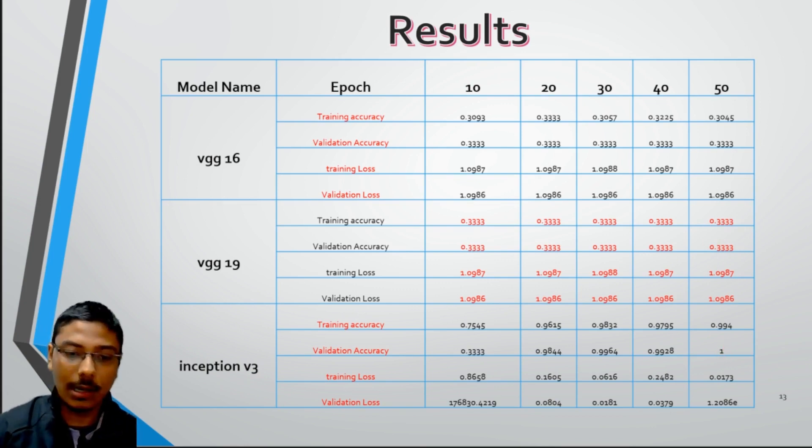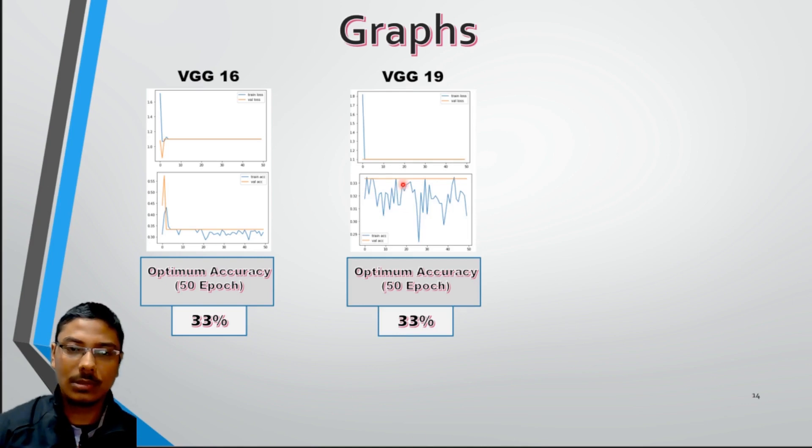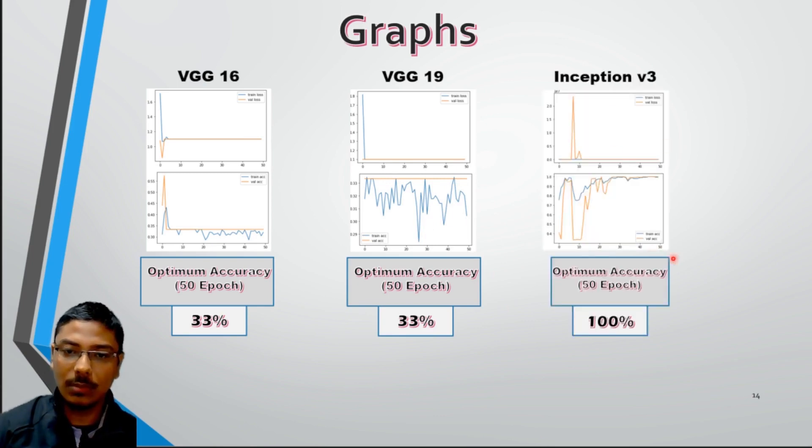In the next slide, we will show the graphs. Here is the accuracy graph of VGG 16. After 50 epochs, we got almost 33%. This is the optimum, because after 33% of accuracy, it's not increasing. We can clearly see in the graph. In VGG 19 also almost the same, because after 50 epochs it's going down. This means the accuracy is less than 33% after 50 epochs also. And here is the Inception V3 model. After 50 epochs, we got almost, not almost, exactly 100%.